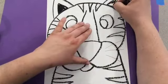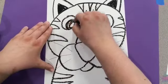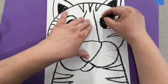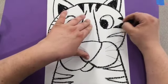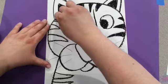After we get everything traced, we're going to color in the inside of the ears, the eyes, the nose, the mouth, our tiger stripes, and don't forget to trace your whiskers.